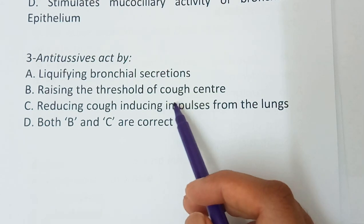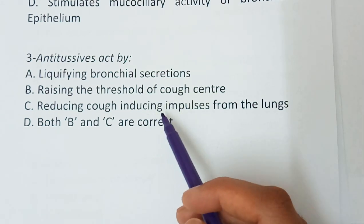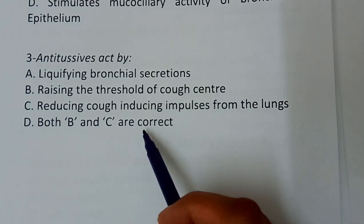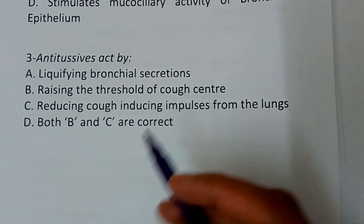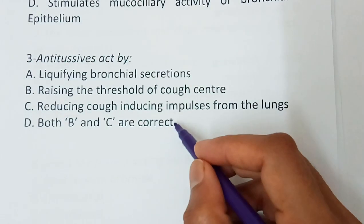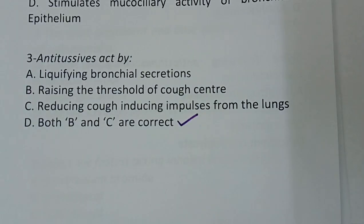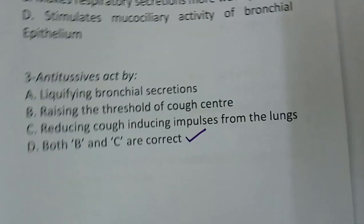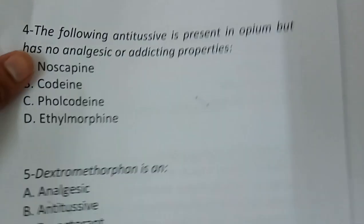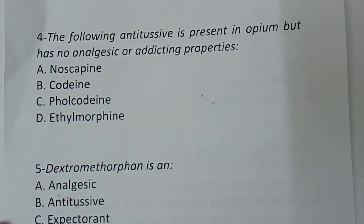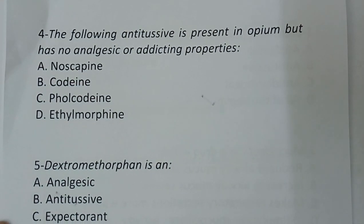Question number three: Antitussives act by — liquefying bronchial secretion, raising the threshold of cough center, reducing cough-inducing impulses from the lungs, or both B and C. The correct answer is both B and C.